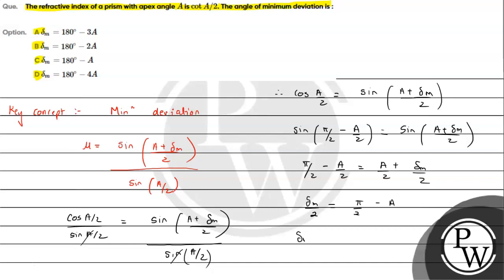Simplifying further, δₘ = π - 2A, which in degrees is δₘ = 180° - 2A.